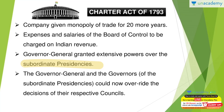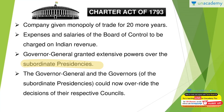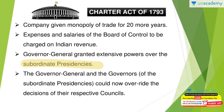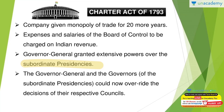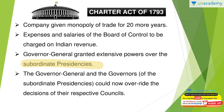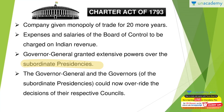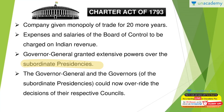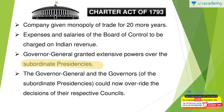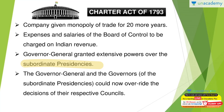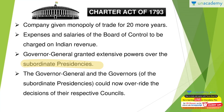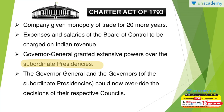When the Governor General of Bengal was present in Bombay or Madras, the local governors were not important — he superseded them and was given more preference and importance as compared to the Governors of Bombay and Madras. So super powers were given to the Governor General. Additionally, when the Governor General was absent from Bengal, he could appoint a Vice President from the civilian members of his council.